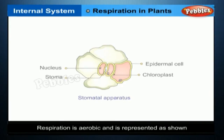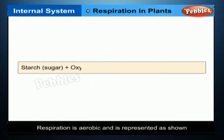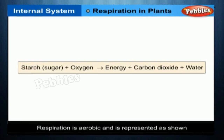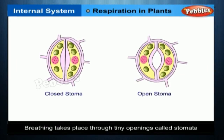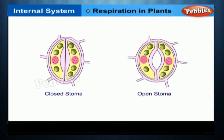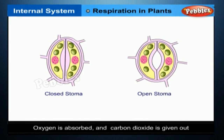Respiration is aerobic. In plants, breathing takes place through tiny holes or openings under the leaves called stomata. Stomata trap air and the exchange of gases takes place inside the plant cells. Oxygen is absorbed and carbon dioxide is given out.